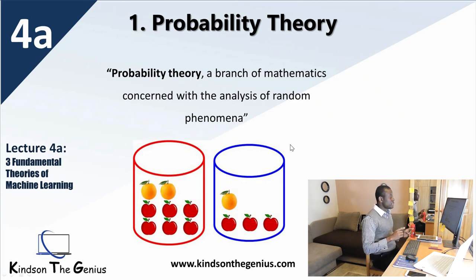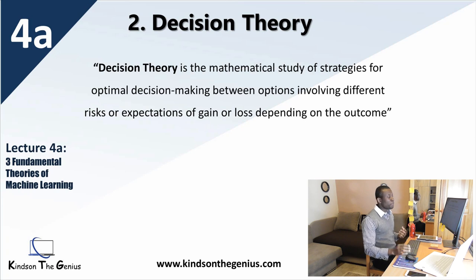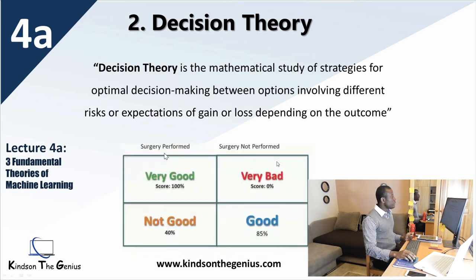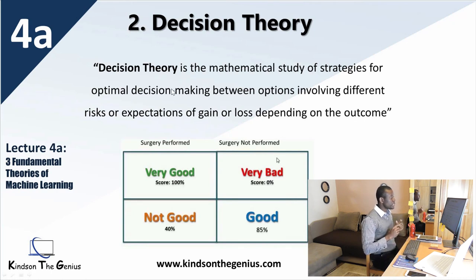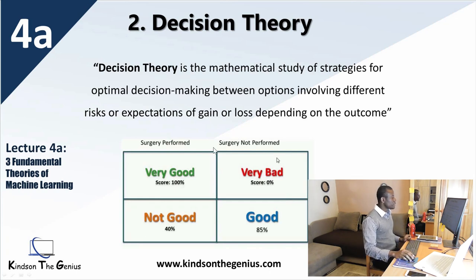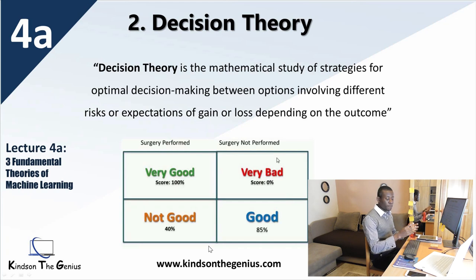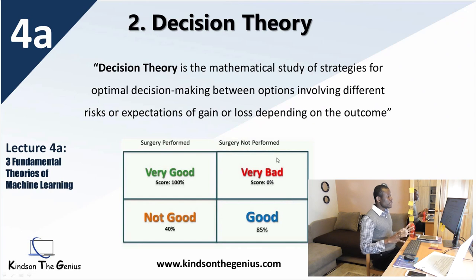The next theory follows directly from probability theory. If you have chances of things happening, which one do you decide? What decision do you make based on the probabilities you know? Decision theory is the mathematical study of strategies for optimal decision making between options involving risks or expectation of gain or loss depending on the outcome. For example, doctors have to decide whether to perform a surgery or not based on certain tests. An application might return a result like 99% or 85% confidence that surgery needs to be performed — decision theory is what goes on behind the hood to help doctors make that decision.